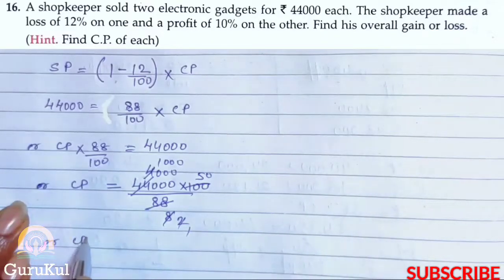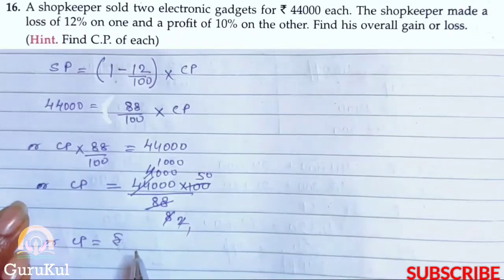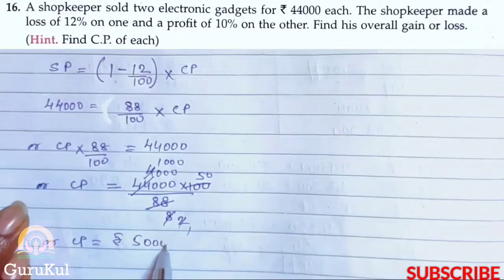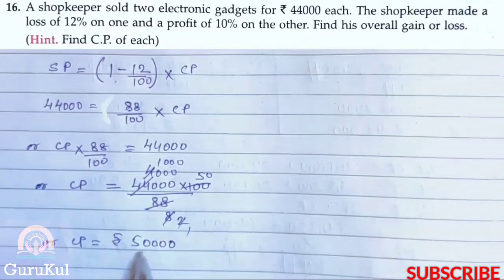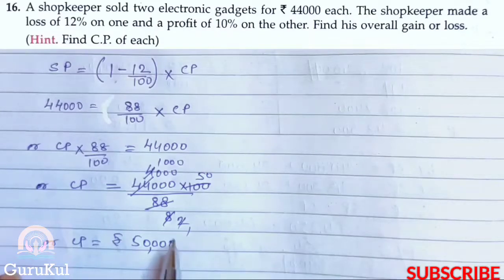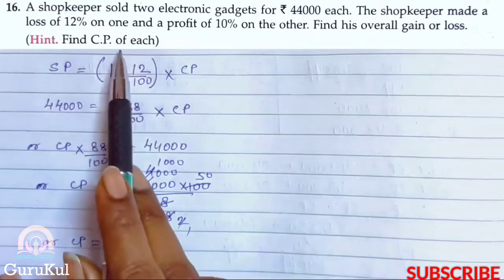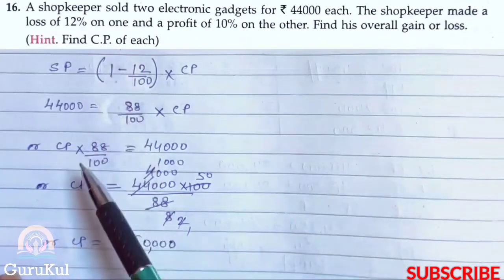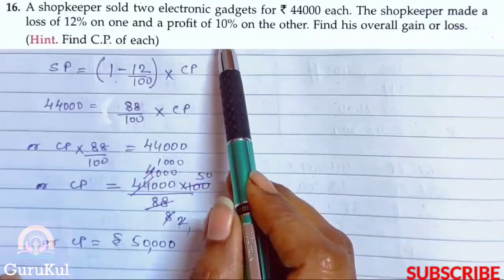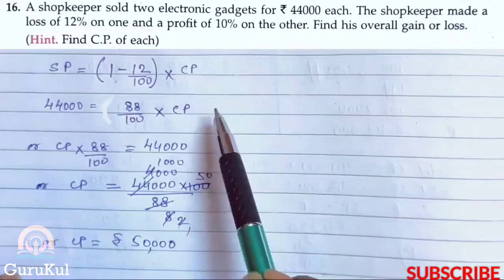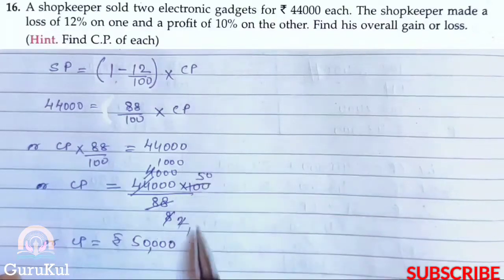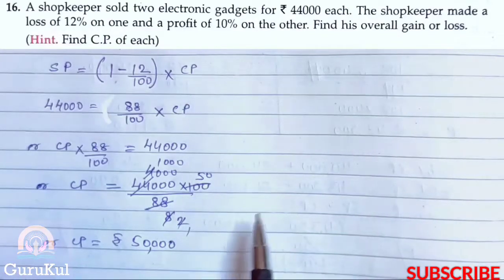So CP is equal to Rs. 50,000. There was a loss here and the shopkeeper sold the first gadget at Rs. 44,000. So the first part is done.